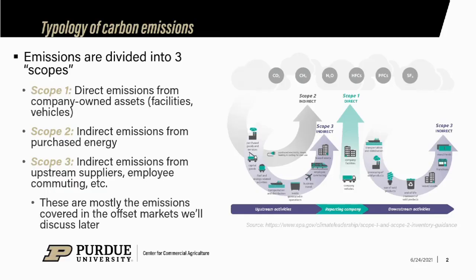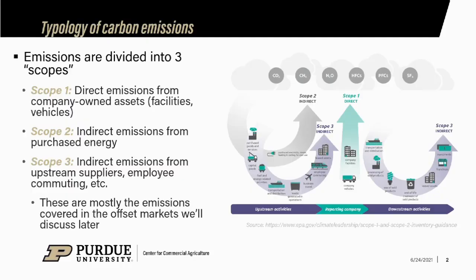Scope 2 emissions are indirect emissions that come from purchased energy inputs. If you're running a factory and you buy electricity to run your equipment, the carbon emissions generated as a result of providing those energy inputs are Scope 2 emissions. You can control those by using less electricity, but you don't control the technology that the people who sell you electricity use. Scope 3 emissions are the ones you have the least control over — generated by employee commuting and suppliers.